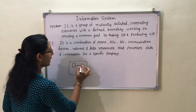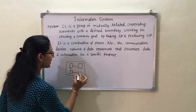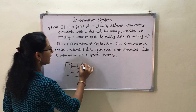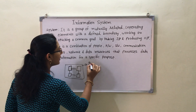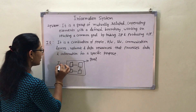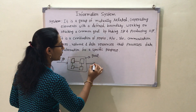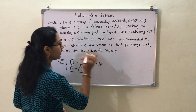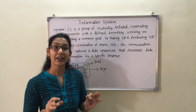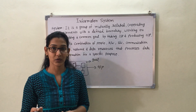A system consists of related and cooperating elements with defined boundaries, which has a particular goal. It takes input from the user and produces output to any organizational process.